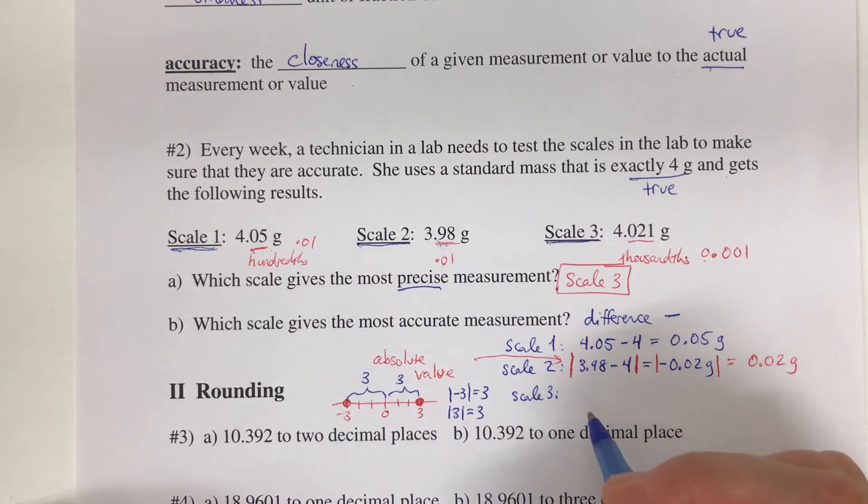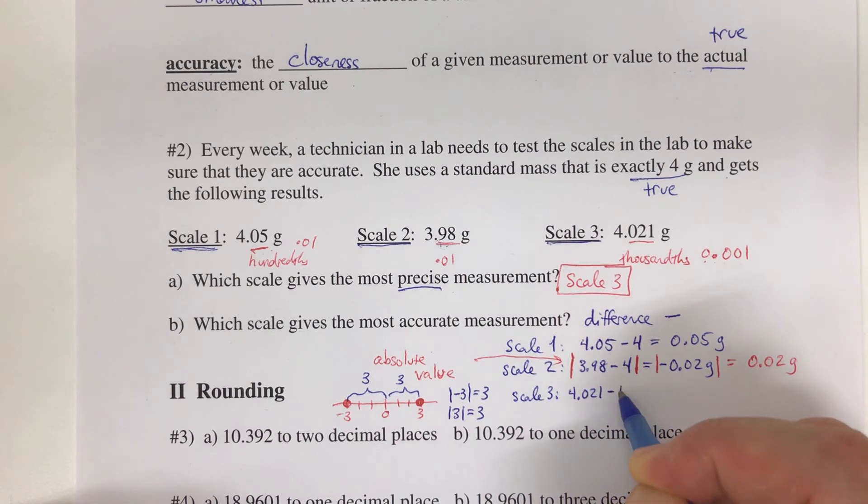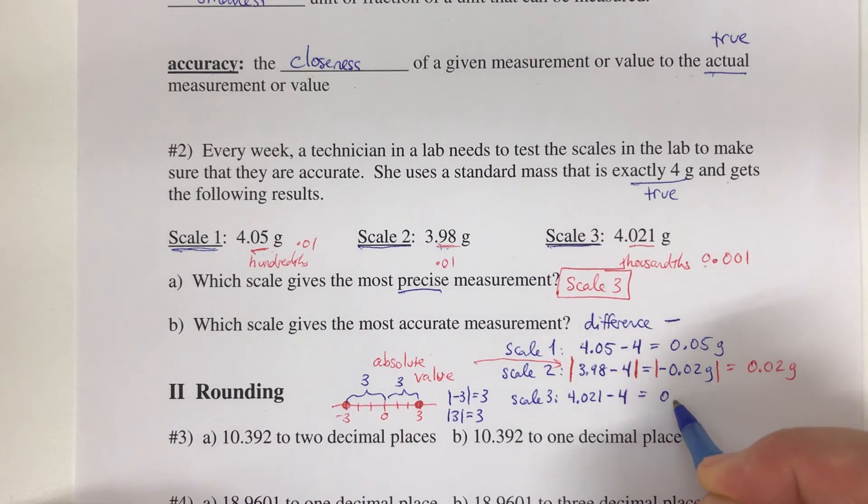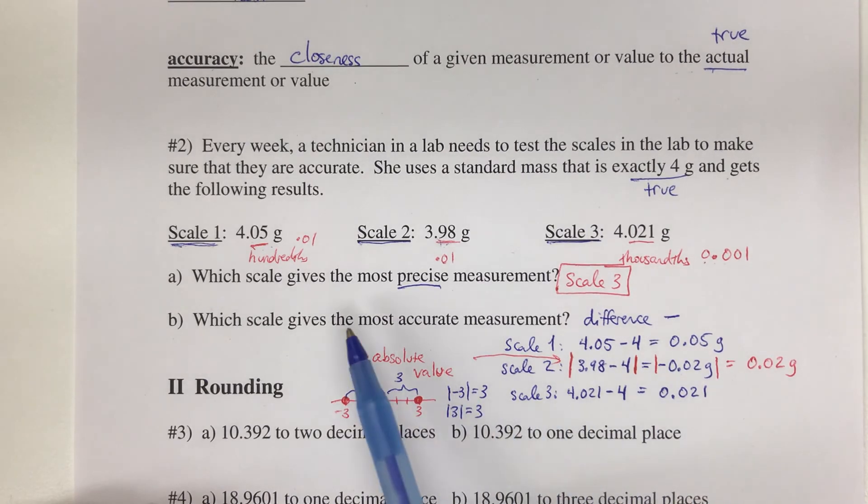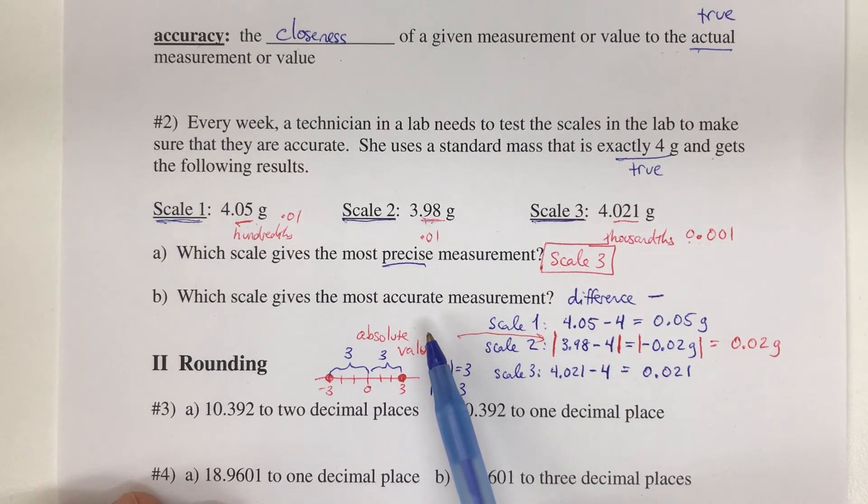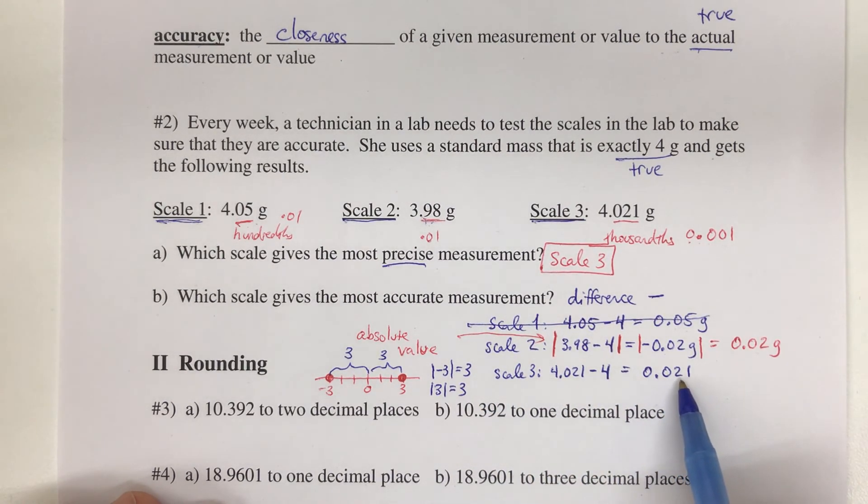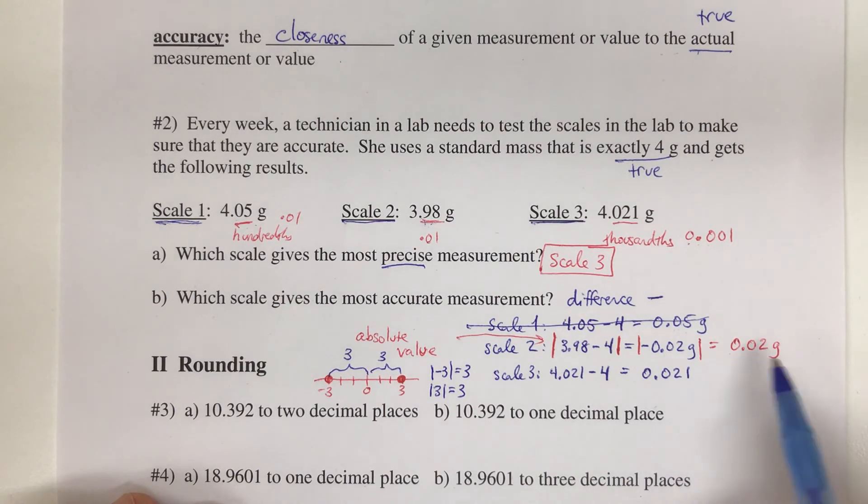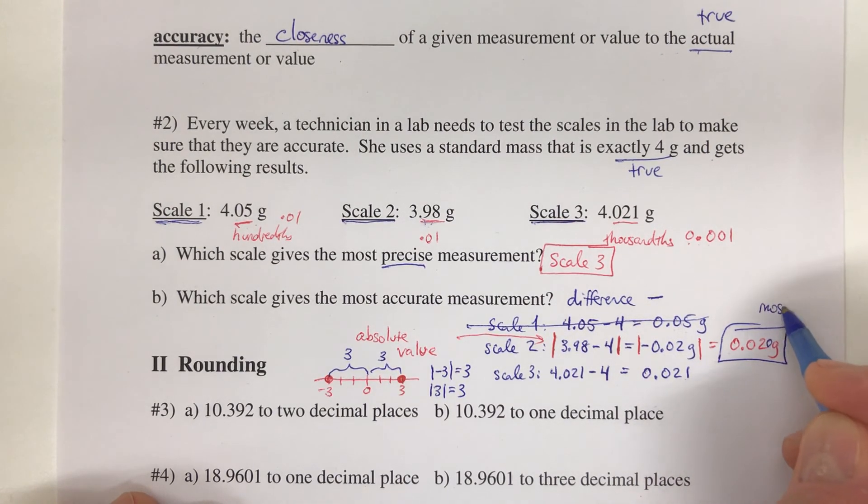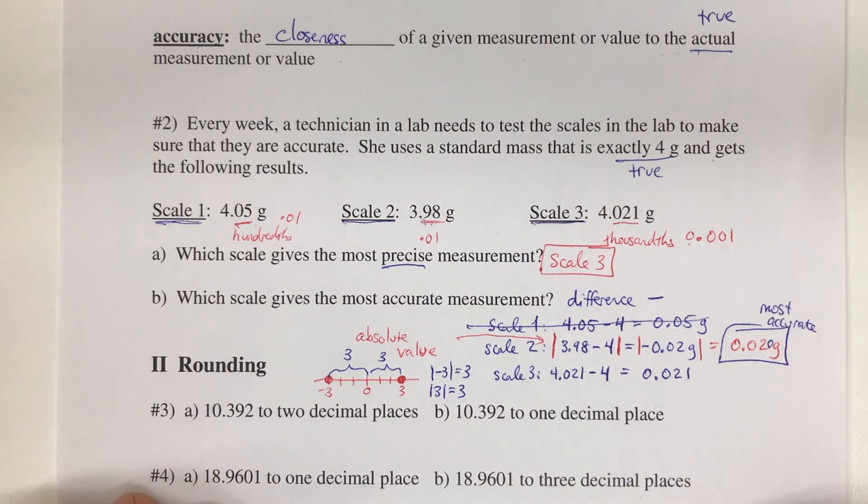For Scale 3, the measure we got was 4.021. The real value was 4, and if we subtract, we get 0.021. We're trying to find the most accurate measurement, so it's the smallest difference. We have 0.05, 0.02 is smaller than 0.05, so it's not the first scale. The third scale's difference was 0.021—these are really close. 0.021 is more precise, but 0.02 is the smaller difference, which is like 0.020. That is the most accurate. It's not the most precise, but it's the most accurate. The answer is Scale 2.